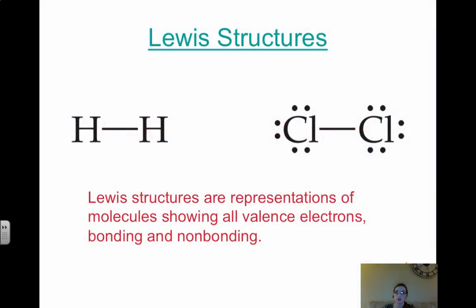As I discussed in a previous video, Lewis structures are just representations of molecules showing all of the valence electrons, both bonding and non-bonding. So Lewis structures are very helpful for us to actually see a molecule and observe how it bonds with other atoms.